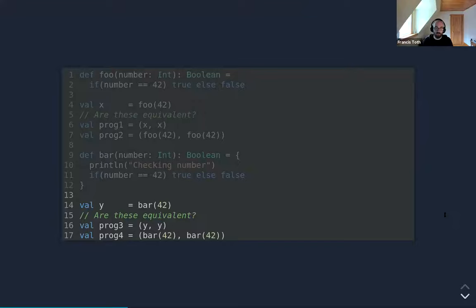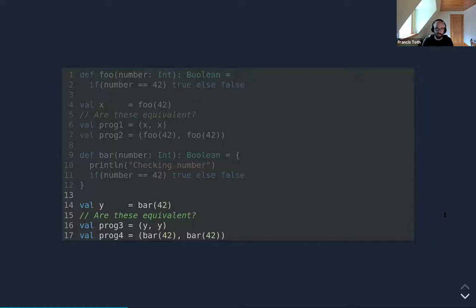Just like `incrementByOne`, we cannot rely on `bar`'s signature to forecast its behavior at runtime, and you cannot replace a call to `bar` by the value it produces or vice versa. In contrast, functions such as `foo` have a very interesting property that can be reasoned about locally. Local reasoning enables a reader to make sense of a function without looking at how it's implemented. In other words, a function can be locally reasoned about whenever its inputs and outputs are all captured respectively by its argument list and its return type.